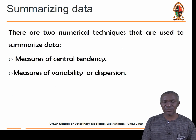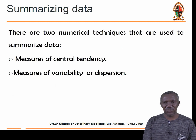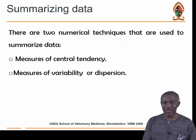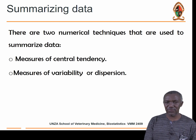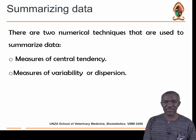When it comes to summarizing data or describing the distribution of a given dataset, there are two parameters that we use to describe a particular population of data or a distribution of data. These are the measures of central tendency and the measures of variability or dispersion.